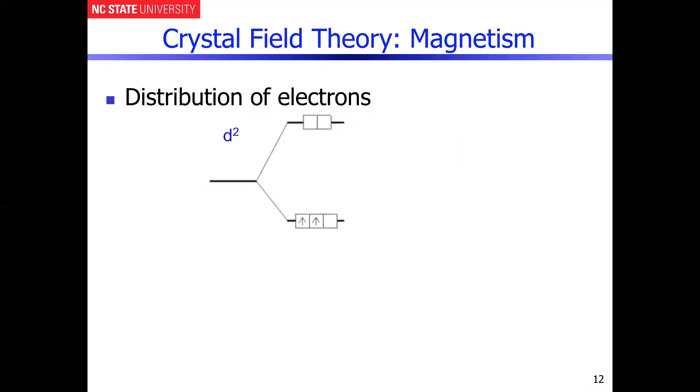So if you recall, if we have an octahedral field, the T2G set is here, and the EG set is up there. And if you have a D1 or a D2 or a D3 configuration, you really have no choice about where to put the electrons. You want to maximize spin multiplicity, so you really have to put them all in the T2G orbital set under those conditions.